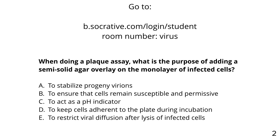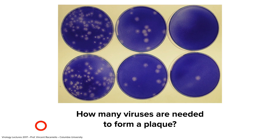When doing a plaque assay, what's the purpose of adding a semi-solid agar overlay on the monolayer of infected cells? 72% of you correctly answered: to restrict viral diffusion after lysis of infected cells. That's why we put an agar overlay on — if we had just liquid, when viruses are released from cells they would spread throughout the culture and you wouldn't be able to count a plaque. A plaque is a focus of dead cells, and that focus is made possible by the agar on top. Cells don't need agar to remain adherent since they stick tightly to the plastic.